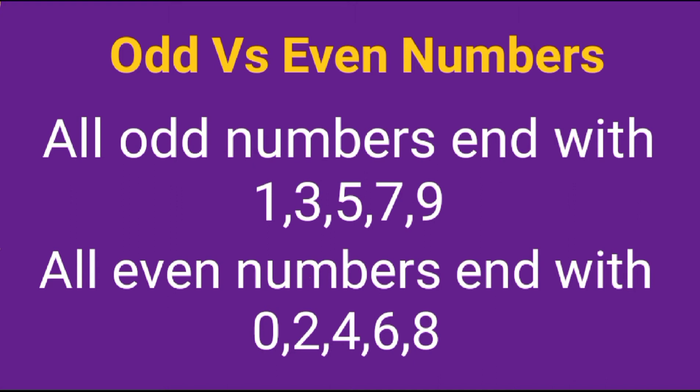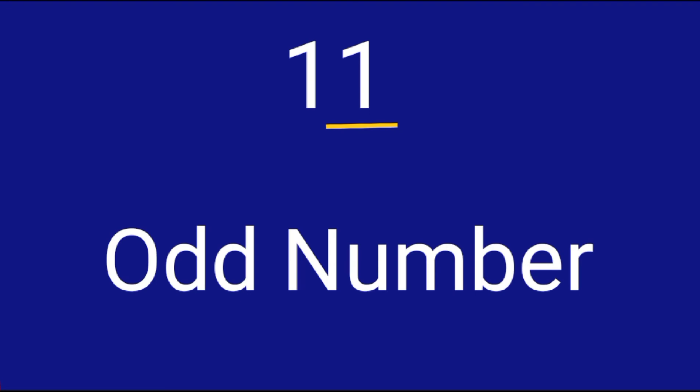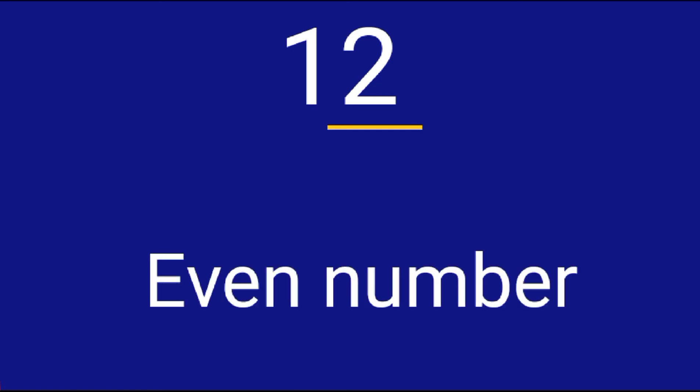Now tell me children, is 11 an odd or even number? What is the ending digit in 11? It is 1, and 1 is an odd number, so 11 is also an odd number. Is 12 an odd or even number? The ending digit in 12 is 2, and 2 is an even number, so 12 is also an even number. What about 13? The ending digit is 3, and 3 is an odd number, so 13 is also an odd number.